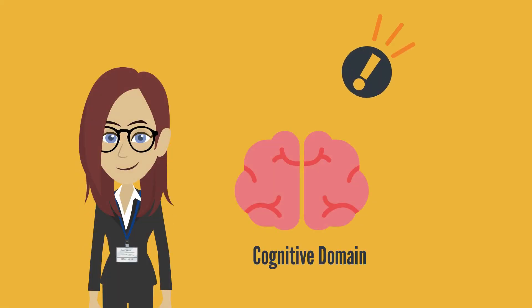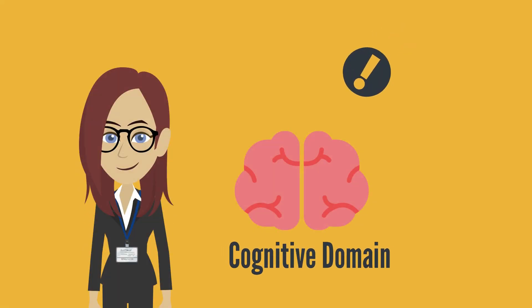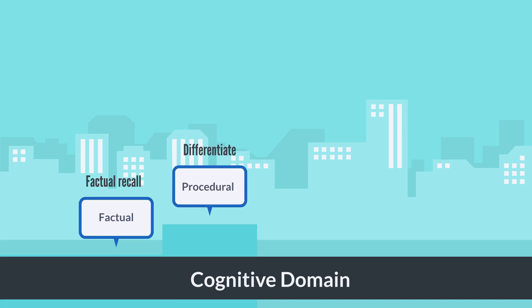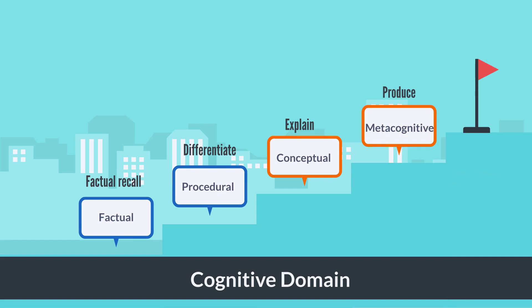A revised version of the cognitive domain identifies four different levels. How well you understand a particular topic will depend on where you are within the cognitive domain. A learner engaging in a new topic will start by memorizing factual information. After that the learner will be able to differentiate between different pieces of information, and moving along the domain they will be able to explain the topics learned, gaining the highest level of understanding when the learner is able to produce something new — new concepts, new ways of contextualizing the information, or a new tangible artifact or product.